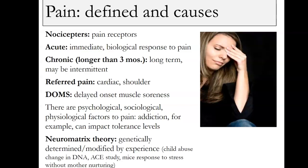Some terminology: nociceptors are pain receptors. We're breaking pain down into acute and chronic stages, and this is a key thing to drive your treatment decisions. In real life it blurs — somebody can be having acute and chronic pain at the same time. We're making an almost artificial designation to make it easier to learn, to be tested on, and to know what to do in what circumstance. Acute pain is an immediate biological response to a trauma situation. Chronic — artificially we say longer than three months — may be intermittent or a long-term situation.